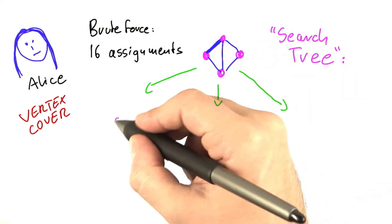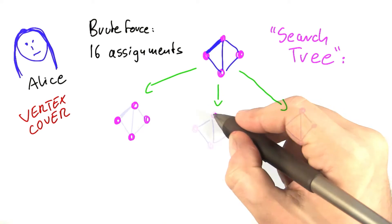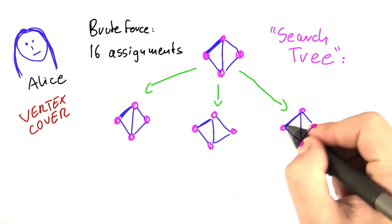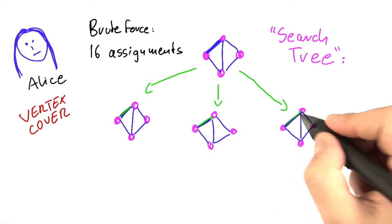There's three cases that make sense here of assigning the vertices to be in the vertex cover or not. So we know this edge needs to be covered somehow. And there's actually just three different possibilities of doing that.